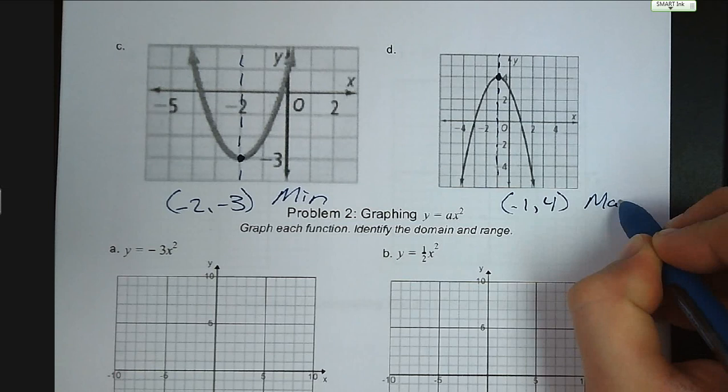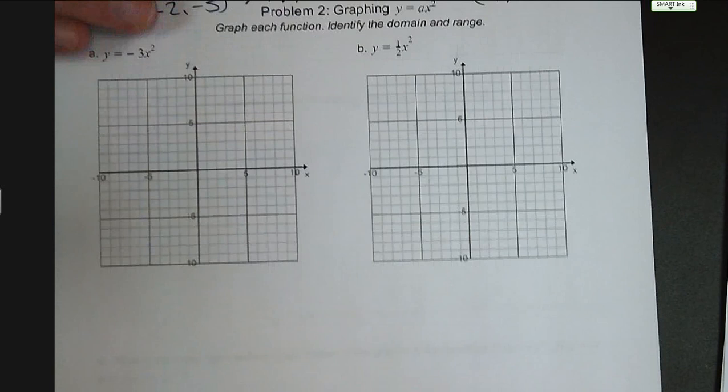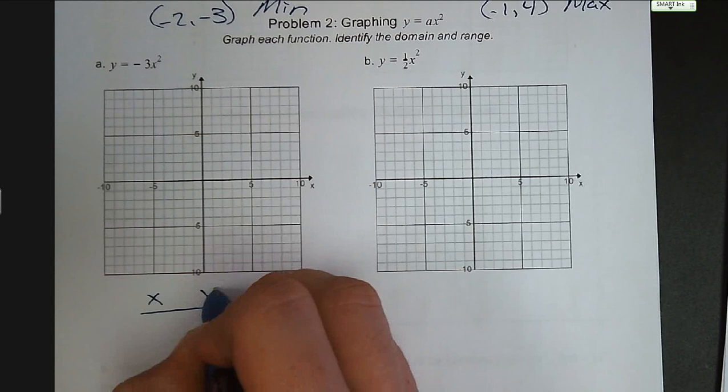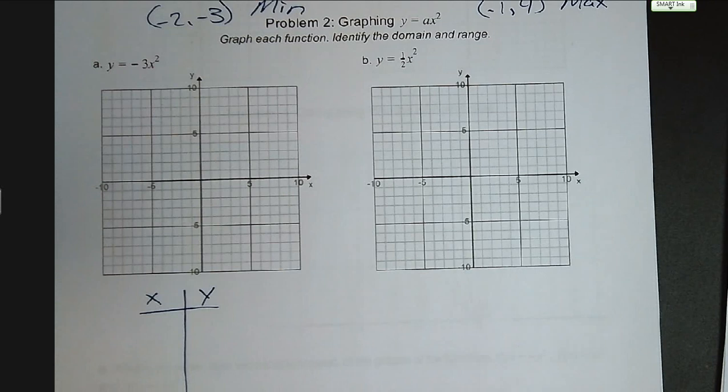Now we're graphing each function of the form y equals ax squared, and then identifying the domain and range. Let's start with an x-y table. We can plug in values for x: negative 2, negative 1, 0, 1, and 2.